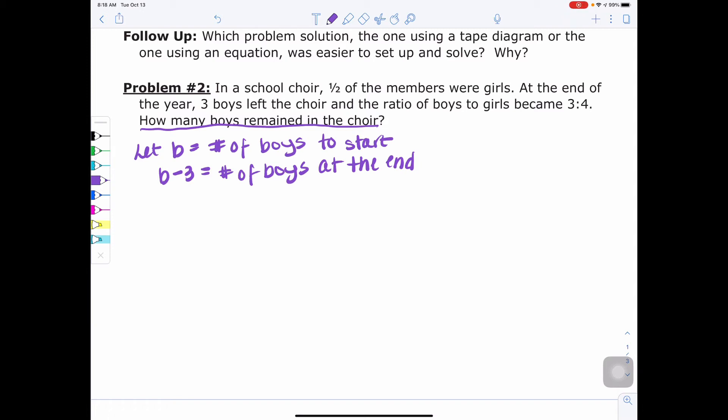Well, this is how it's going to work. In a school choir right here, it says half of the members were girls. And we said B represented the number of boys to start. So if they were evenly split in half, that means B also represents the number of girls to start. So now they said they want us to set up a ratio because it says the ratio of boys to girls became three to four. And that was at the end of the year. So we want to use our end of the year numbers.